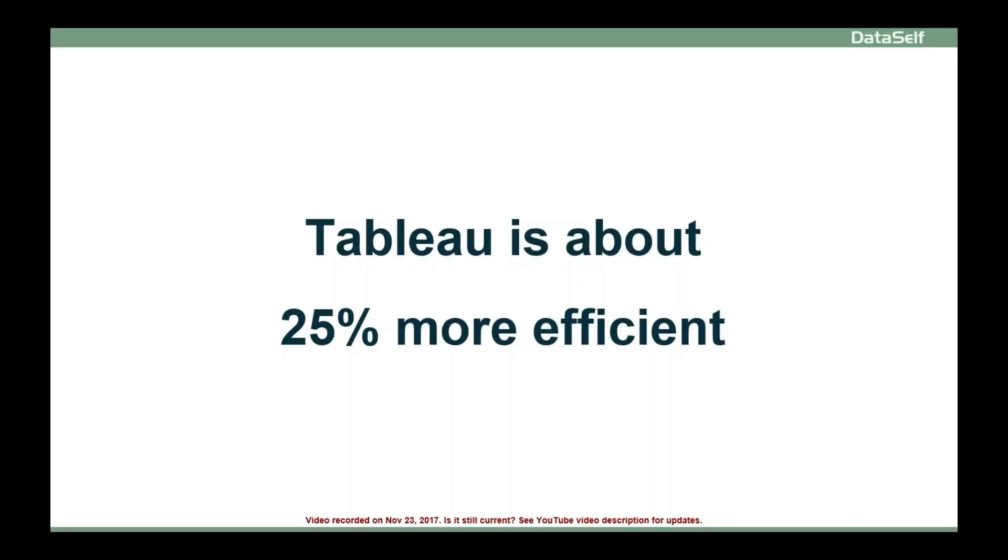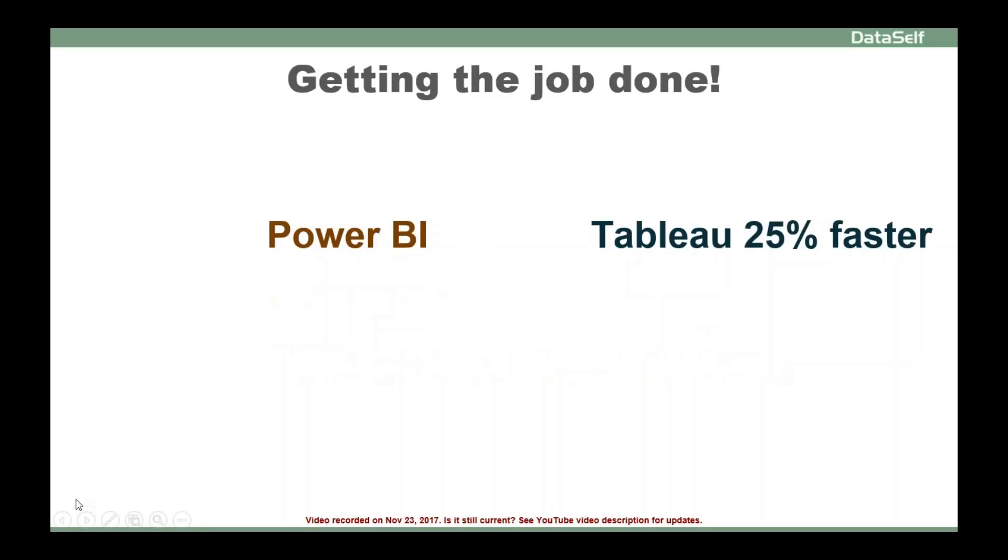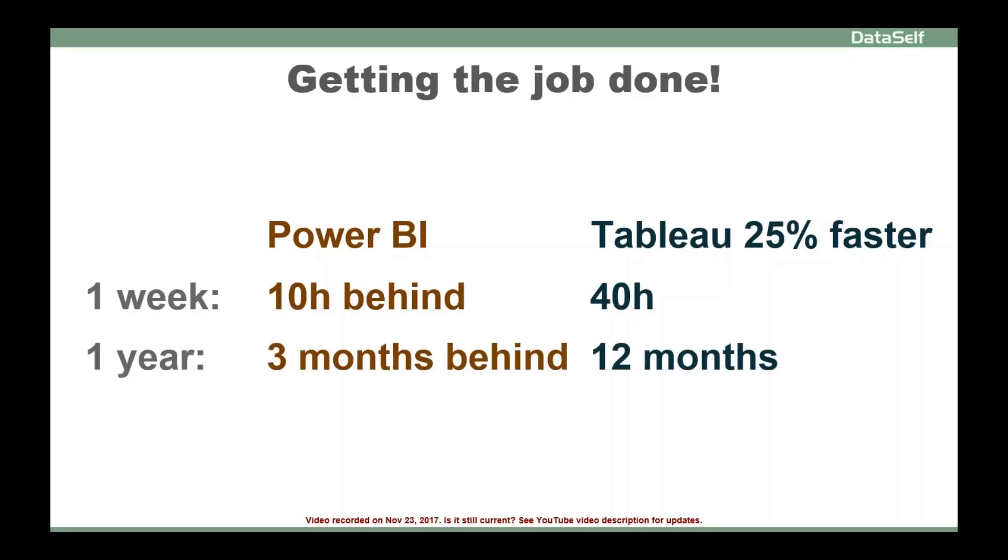Now, for clients or organizations that are similar to these clients that we assessed, what does that mean in the long run? Well, for the people who have to get the job done, in about a week, if they're working with Tableau, they deliver 40 hours worth of analytics. If they're using Power BI instead, they're going to be about 10 hours behind because Tableau is 25% faster. So people working, they'll have to work extra hours, maybe over the weekend, or be behind schedule. In the course of a year, for the person with Tableau that will work for 12 months worth of analytics, the person doing the same work with Power BI will be 25% behind, which is pretty much three months behind, or working a lot of extra hours to keep up with the job. So that's the perspective from the person who has to do the job.